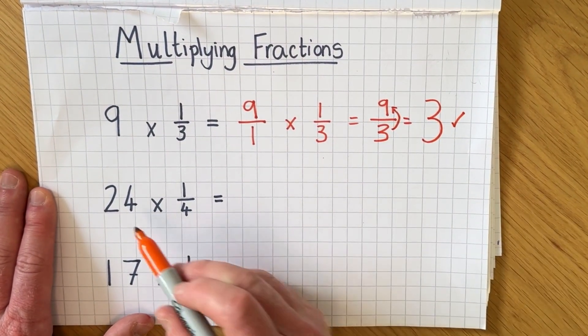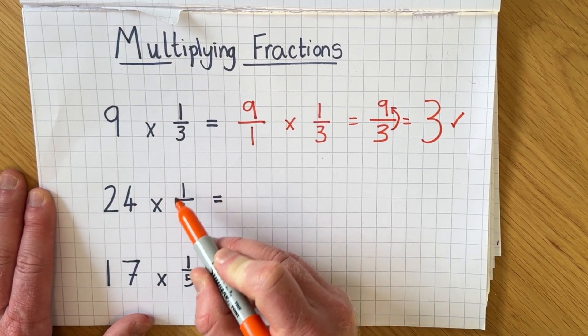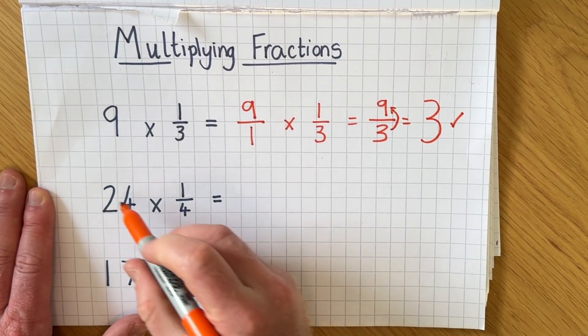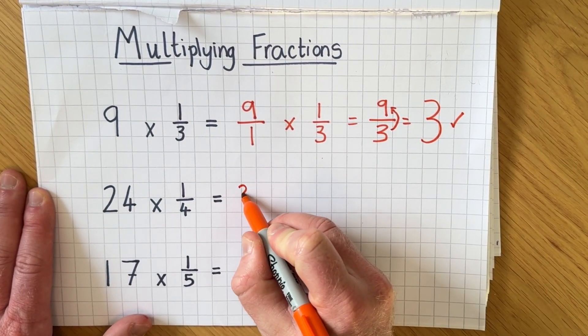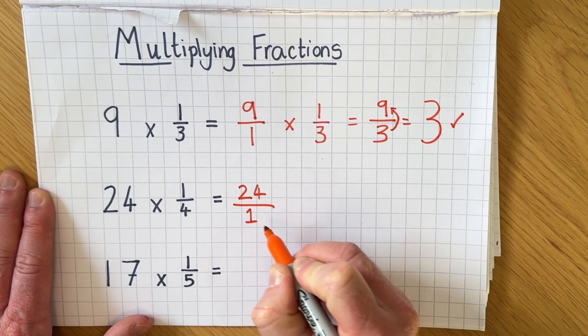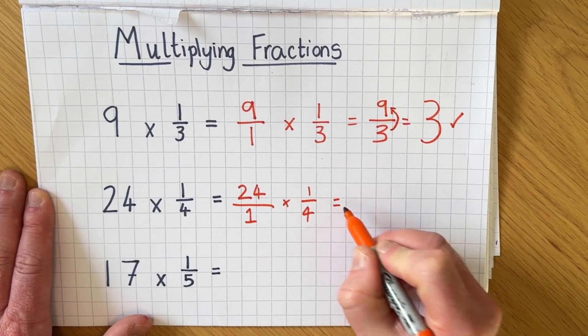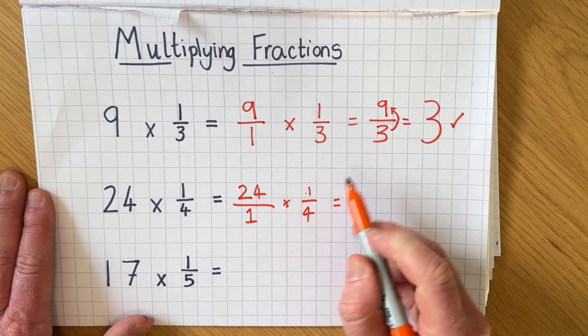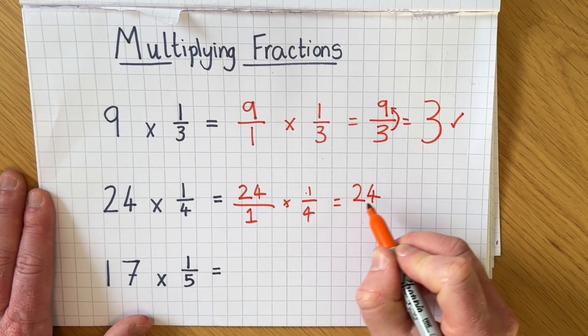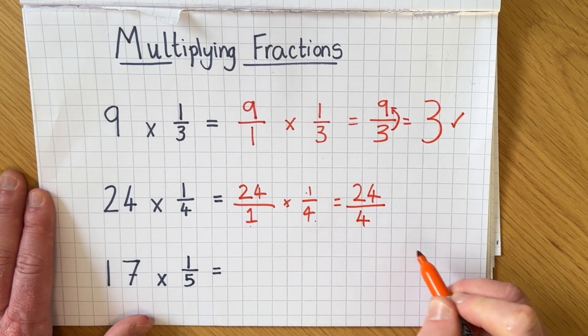Looking at this next one then so we have 24 multiplied by 1/4 so I'm going to change the 24 into an improper fraction 24/1 then I'm going to multiply it by 1/4. So 24 times 1 is 24. One times four is four.